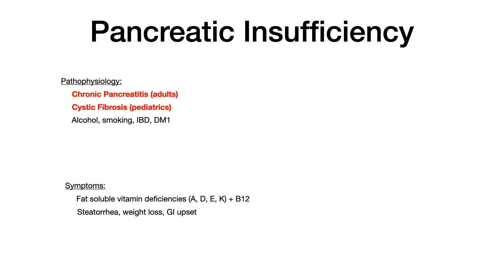Now let's talk about pancreatic insufficiency. As the name implies, this is when a problem with the pancreas impairs its exocrine function, preventing it from secreting the enzymes necessary to break down various substances — which is why this is a malabsorption syndrome. On your exam, if you're dealing with an adult patient, the cause will be chronic pancreatitis. If it's a pediatric patient, the cause will be cystic fibrosis. Other causes exist — alcoholism, smoking, IBD, type 1 diabetes — but for exam purposes, it's chronic pancreatitis or cystic fibrosis.